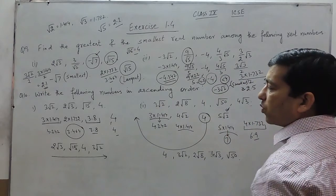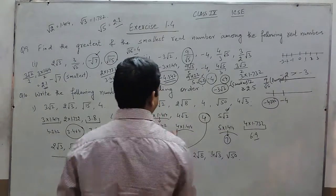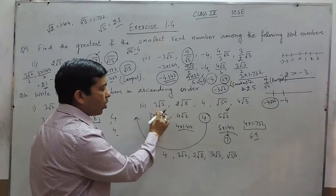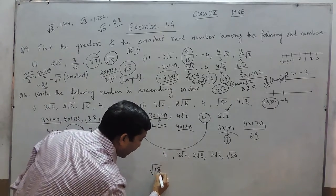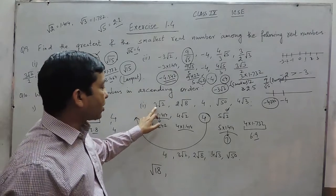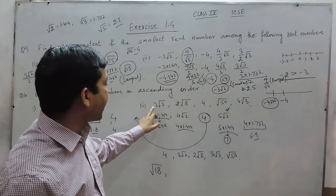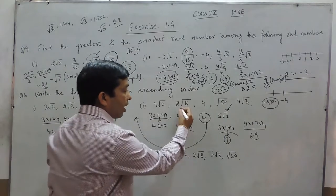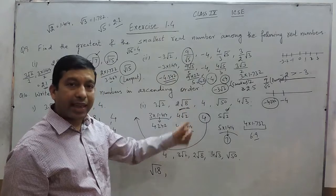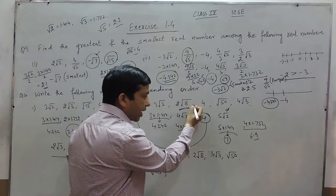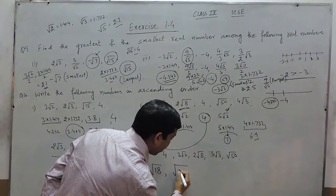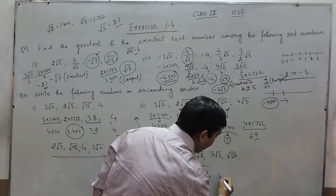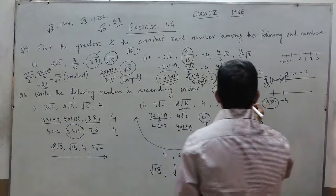There is one more method for solving this kind of question: put all the numbers under roots and then compare. For 3√2, I can write it as under root of 18 — because 3 squared is 9, and 9 multiplied by 2 is 18. For 2√8: the 2 goes inside as 2 squared = 4, so 4 multiplied by 8 gives under root of 32. 4 can be written as under root of 16. Under root of 50 is automatically in root form. For 4√3, this 4 becomes under root of 16.